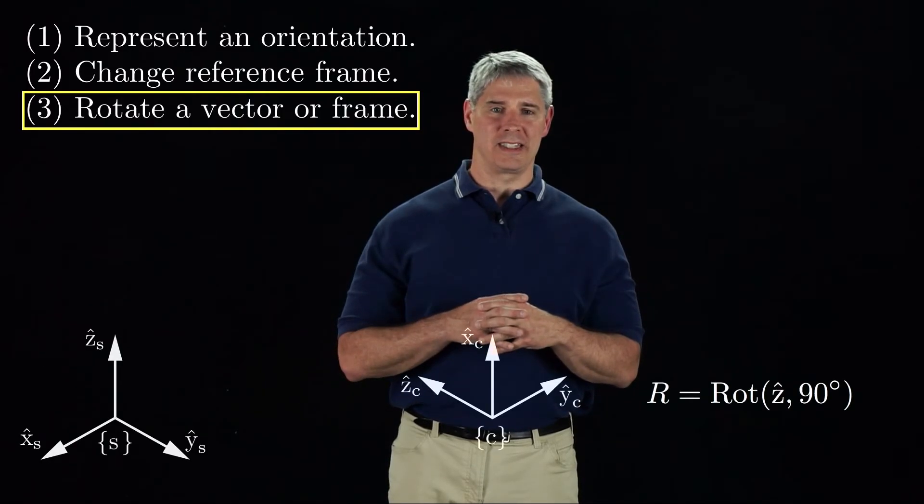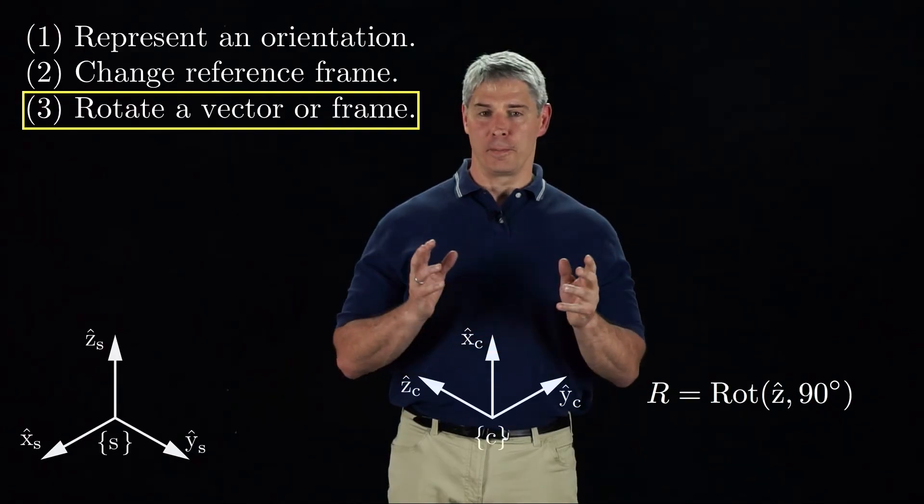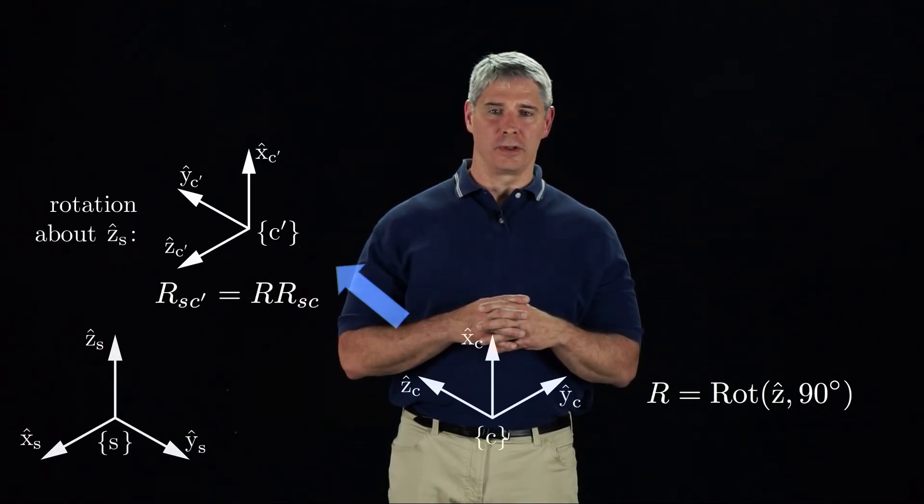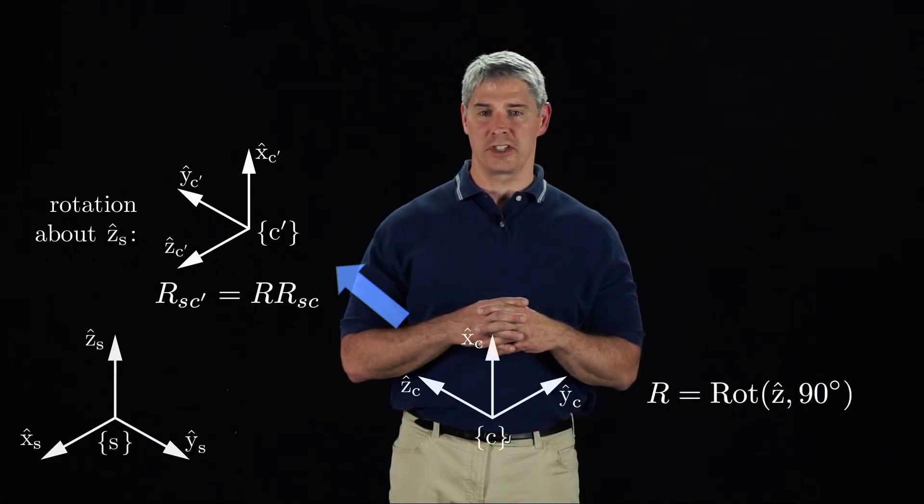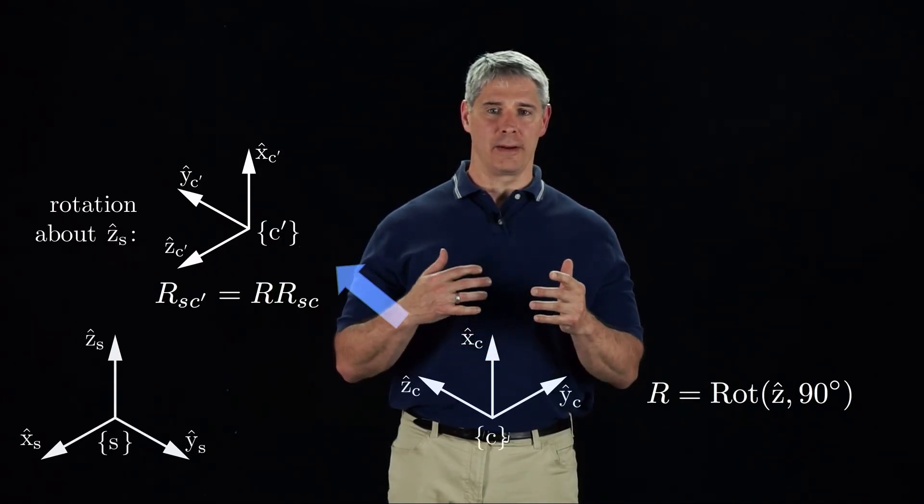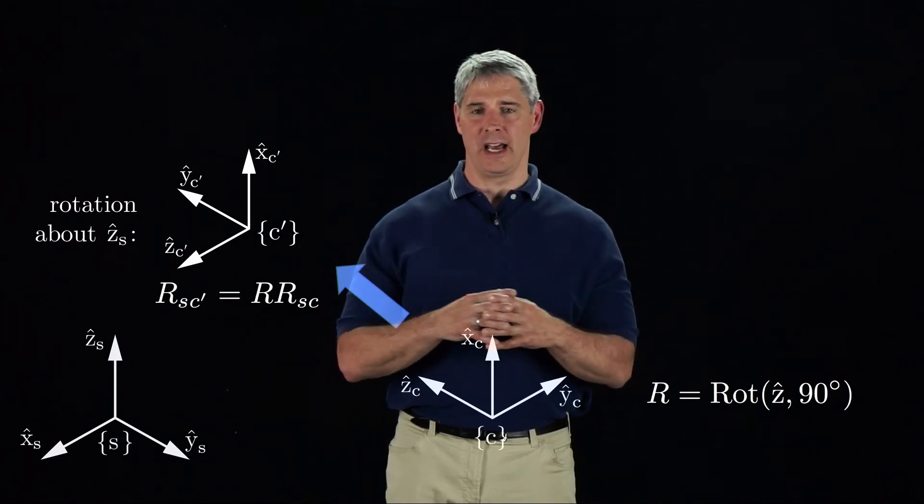We can also rotate the frame C by pre-multiplying or post-multiplying RSC by the rotation operator R. If you pre-multiply by R, the rotation axis is interpreted as the Z axis of the frame of the first subscript, S. You end up with a rotated frame C prime, still expressed in S.